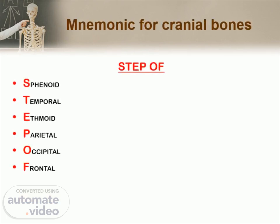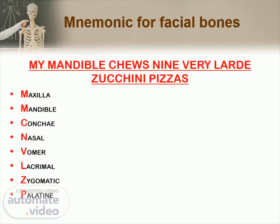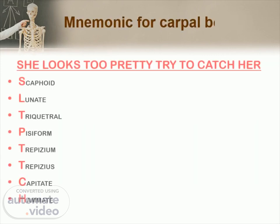The mnemonic for cranial bones is STEP OF: Sphenoid, Temporal, Ethmoid, Parietal, Occipital, Frontal. The mnemonic for carpal bones is 'She Looks Too Pretty, Try To Catch Her': Scaphoid, Lunate, Triquetral, Pisiform, Trapezium, Trapezius, Capitate, Hamate. The mnemonic for tarsal bones is 'Try Catching Naughty Cute Chicks': Talus, Calcaneum, Navicular, Cuneiform (three), Cuboid.